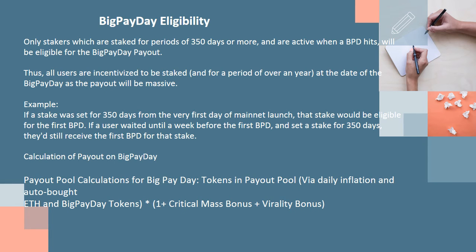Big Pay Day eligibility: only stakers which are staked for periods of 350 days or more and are active when a BPD hits will be eligible for the Big Pay Day payout. All users are therefore incentivized to be staked for a period of over a year. For example, if a stake was set for 350 days from the very first day of mainnet launch, that stake would be eligible for the first BPD. If a user waited until a week before the first BPD and set a stake for 350 days, they'd still receive the first BPD for that stake.